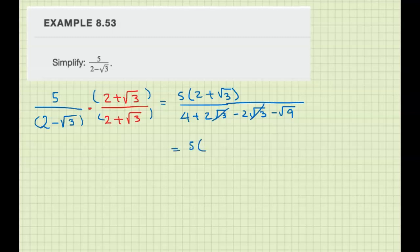We get five times two plus square root of three, and you can distribute the five if you want. We get ten plus five square root of three over one, which is ten plus five square root of three.